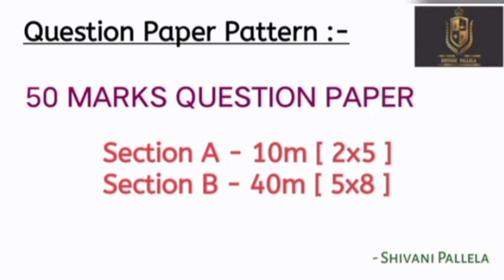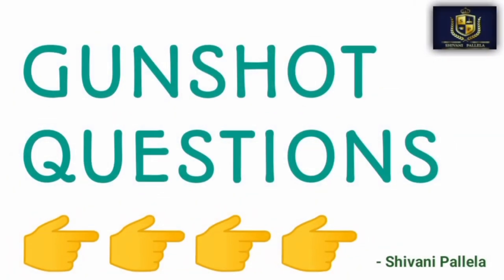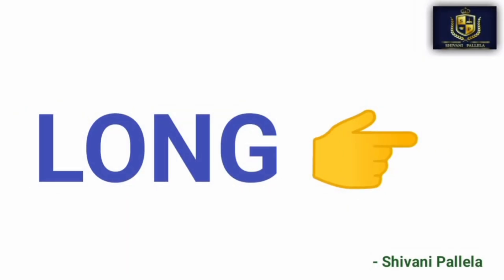Out of 50 marks, 18 is the passing marks. When attempting short two-mark questions, minimum five to six lines need to be written. For long eight-mark questions, minimum two sides — front and back — of your pages is a must. Now we will discuss the most important long questions for Part B, eight marks.